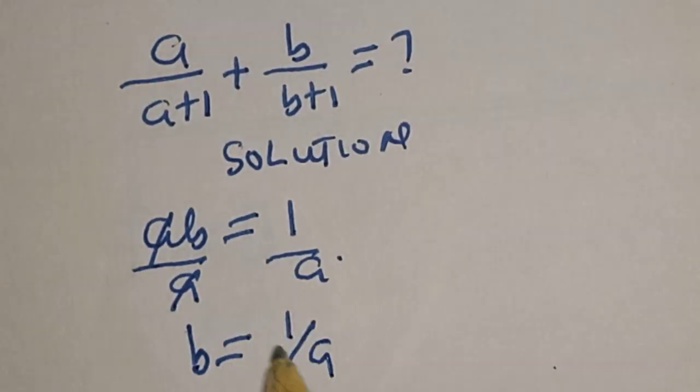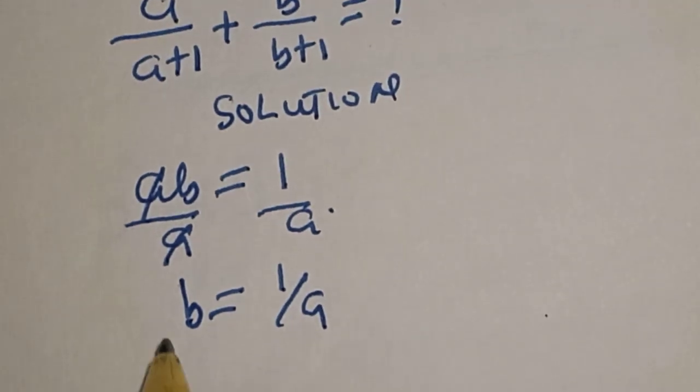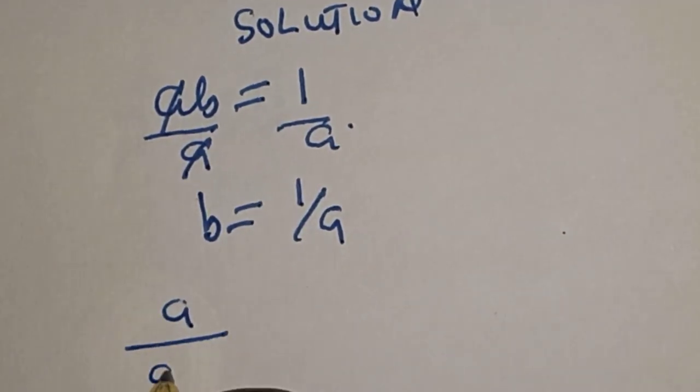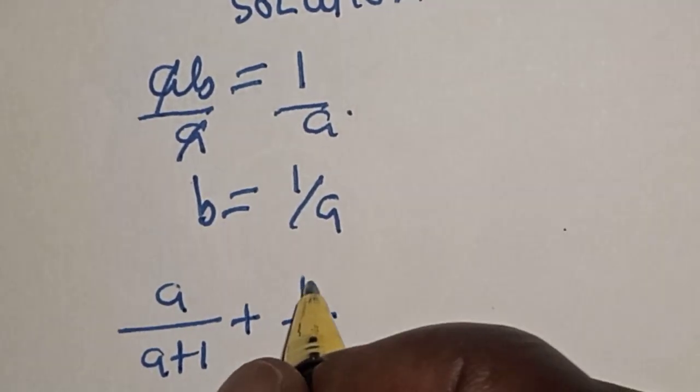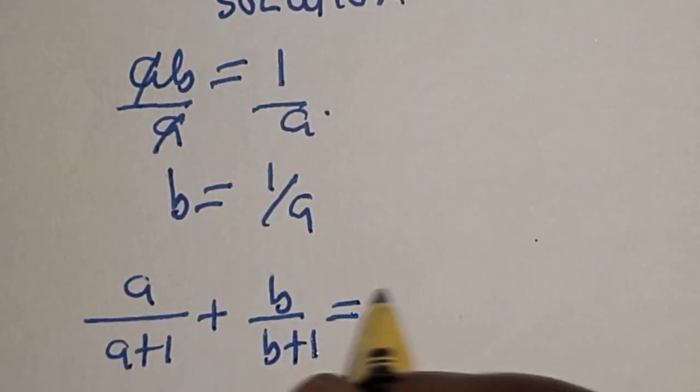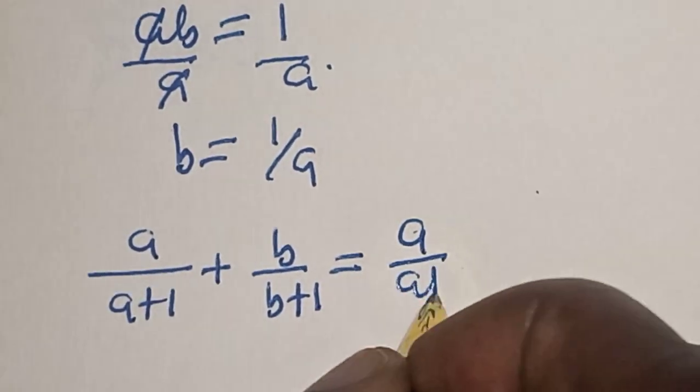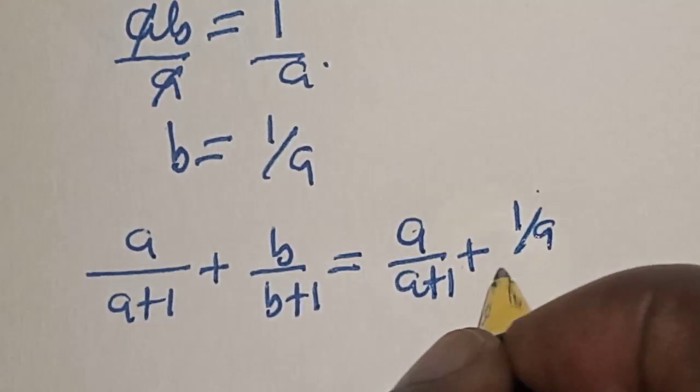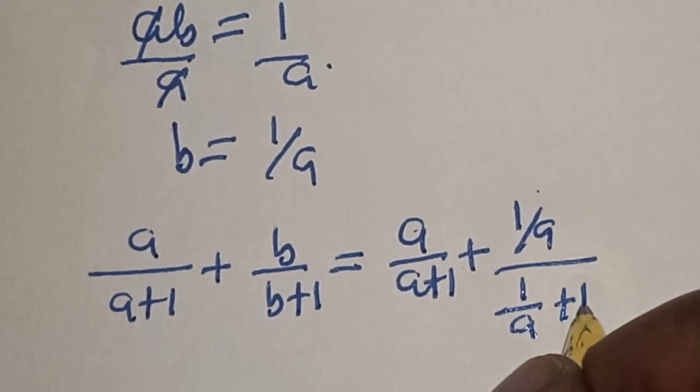And let's substitute for b in this given equation. That is a over a plus 1 plus b over b plus 1 is equal to a over a plus 1 plus b is 1 over a over 1 over a plus 1.